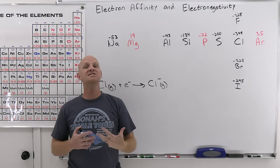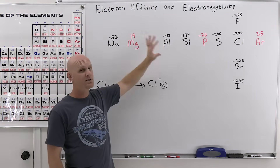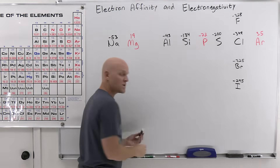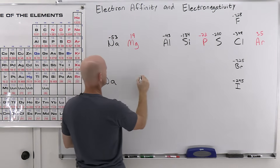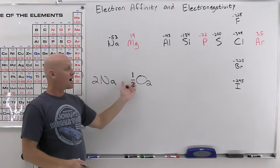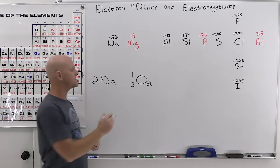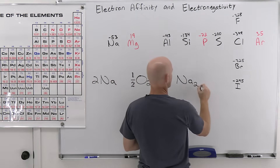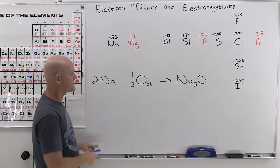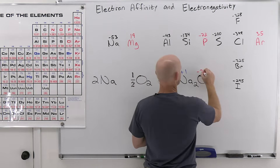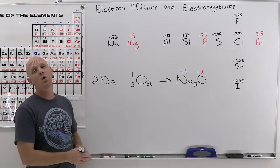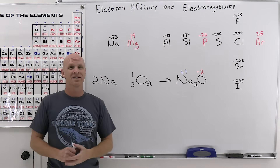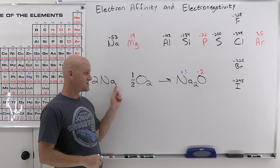Just like with ionization energy, we can also talk about successive electron affinities — but the trend we've learned only applies to the first electron affinity. Let's look at sodium and oxygen forming sodium oxide. Sodium is going to lose electrons to become sodium ions, and oxygen is going to gain electrons to become the oxide ion. The lie we often tell students is that sodium 'wanted' to lose electrons to get a filled octet, and oxygen 'wanted' to gain them. There are two lies in that — first, sodium doesn't want to lose electrons; losing electrons is ionization energy, which costs energy.